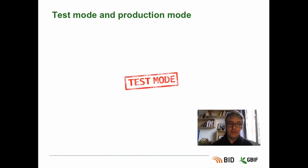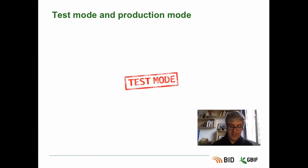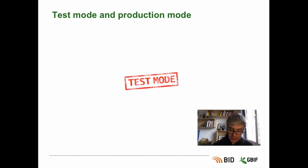The IPT can be configured either in test mode or in production mode. Production mode is for real-world use, and all published data will be available at GBIF. Test mode, on the other side, is designed for learning and experimentation. The datasets published in test mode will not be visible on the GBIF website. Please note that the IPT cannot be switched from one mode to another, so when using an IPT you have to know from the start if you need to connect to a test mode IPT or a production mode IPT.